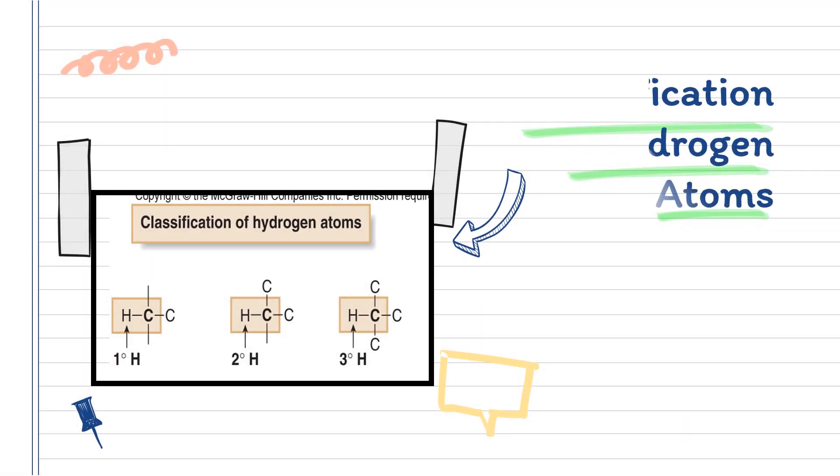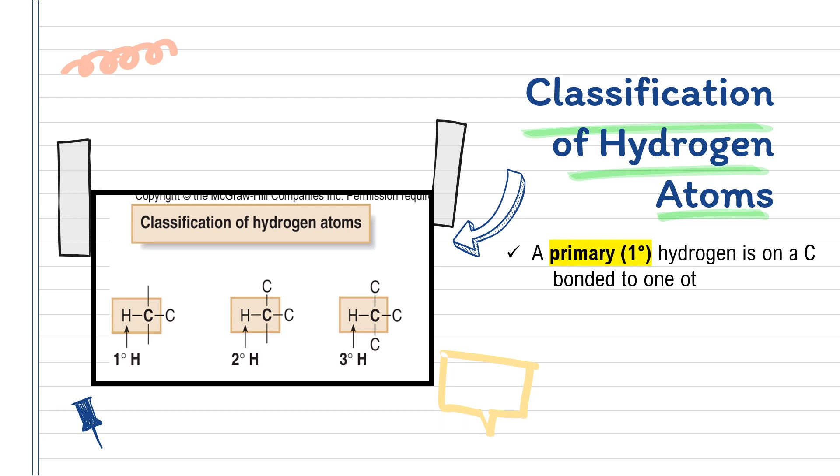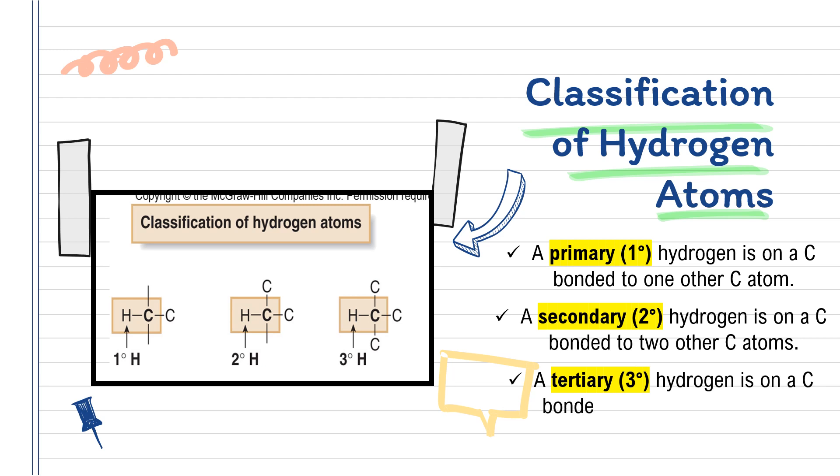Similar to carbon, hydrogen can also be classified into its own class. For hydrogen atoms, we have three classes: primary hydrogen, secondary hydrogen, and tertiary hydrogen, with the same basis, which is based on the type of carbon that the hydrogen is attached to.